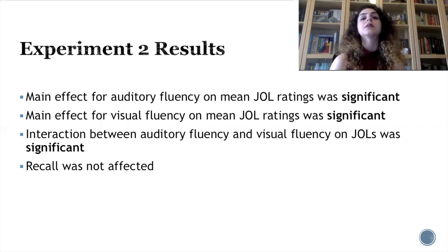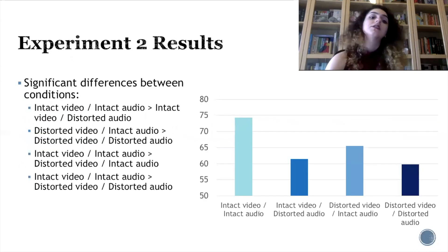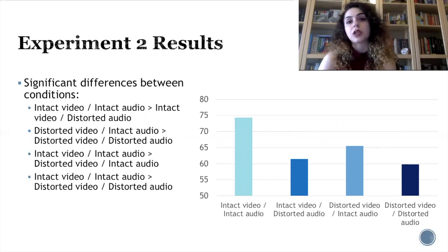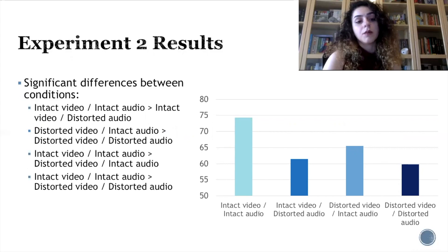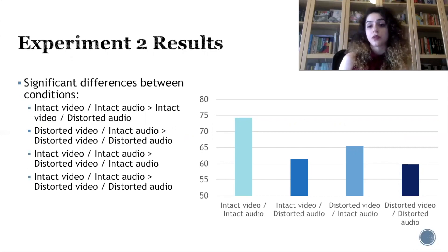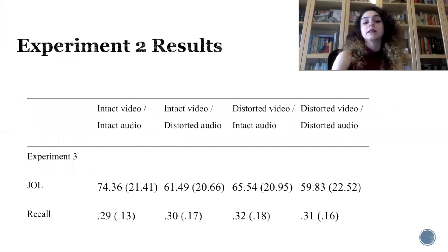Results showed that participant JOLs were affected by both auditory and visual fluency significantly, and the interaction between them was significant as well. But recall remained unaffected just like in experiment one. So, this interaction showed that participant JOLs were affected by auditory fluency more than visual fluency. Because when the auditory fluency was intact, participants gave higher JOLs compared to the condition in which both modalities were disfluent.